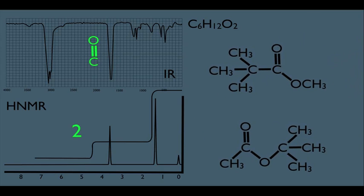That leaves us with these two structures. Let's see how many types of hydrogens are in the top molecule. If we call these the A-type hydrogens — they're all equivalent due to signal averaging — and this hydrogen is different, so this molecule has two types of hydrogens. For the molecule below, it has an A-type hydrogen here and all these hydrogens would be equivalent B-type hydrogens, so it also has two types of hydrogens. The first aspect of NMR doesn't help us distinguish these.